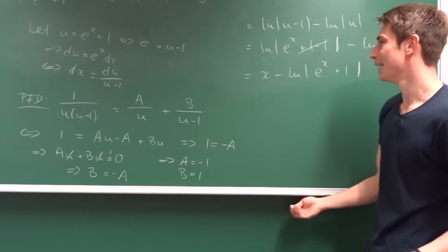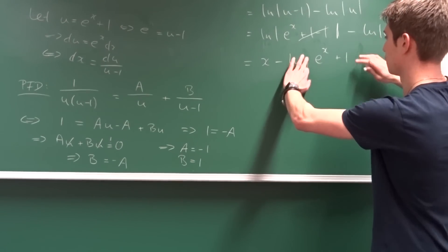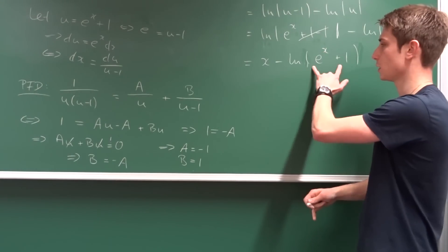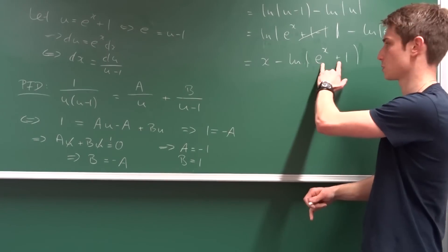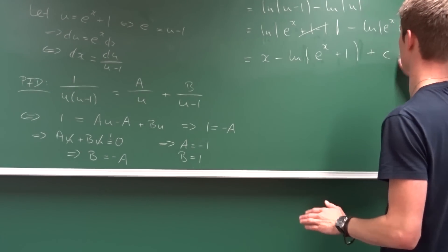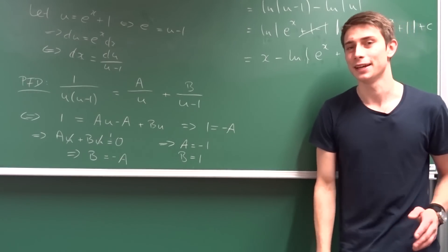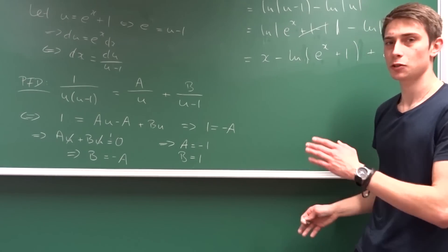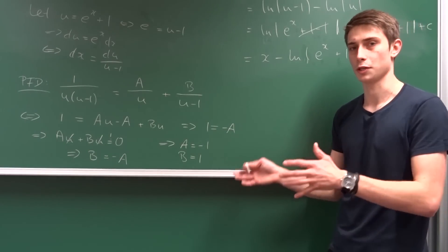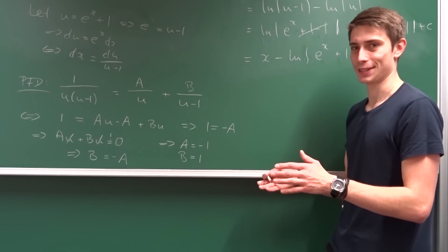In the end we get x minus the ln of e to the x plus 1, plus an arbitrary constant C. We can omit absolute value signs since the argument is positive. That was the second method, already giving a different-looking answer from the first. It gets more exotic from here, so stay tuned.